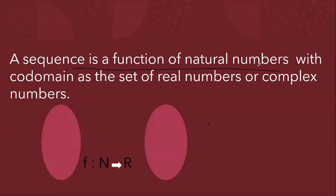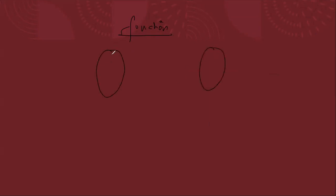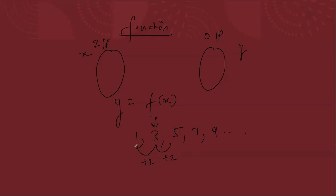Now, an important concept: sequence is a function. Sequence is a function of natural numbers with co-domain as the set of real numbers. First, what is a function? A function means you have an input and an output, shown as y = f(x). You give some x and you get some y. It is very very important to understand how sequence is a function.